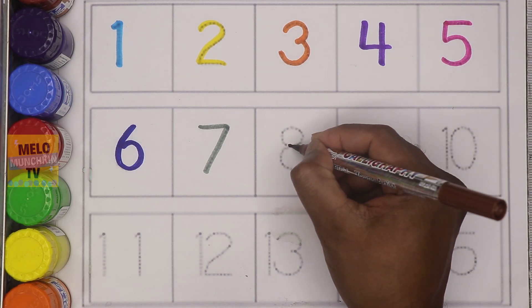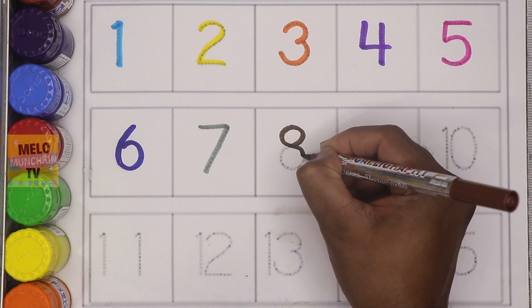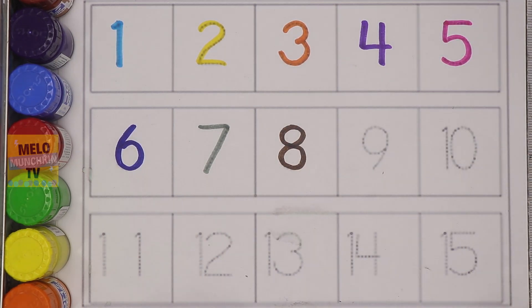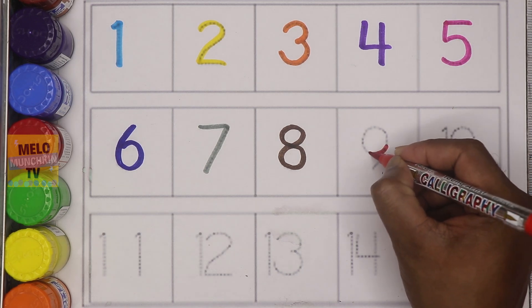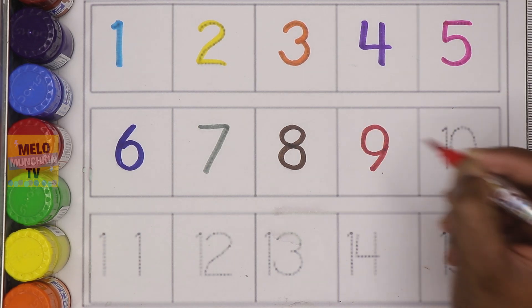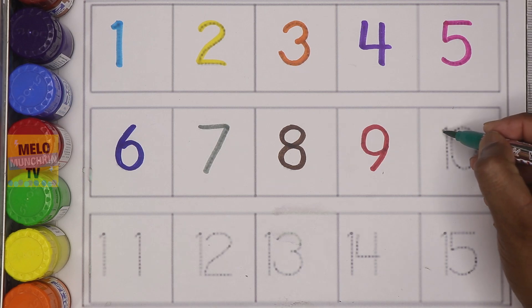Brown color - eight: E-I-G-H-T, eight. Red color - nine: N-I-N-E, nine.